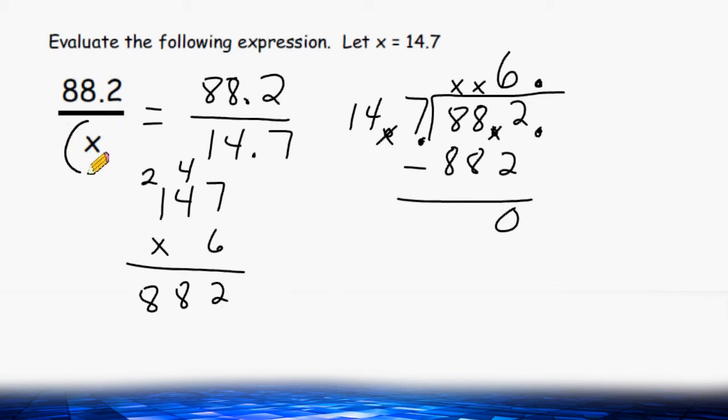So after substituting x with 14 and 7 tenths, and then taking 88.2 and dividing it by 14.7, the quotient ended up being 6.